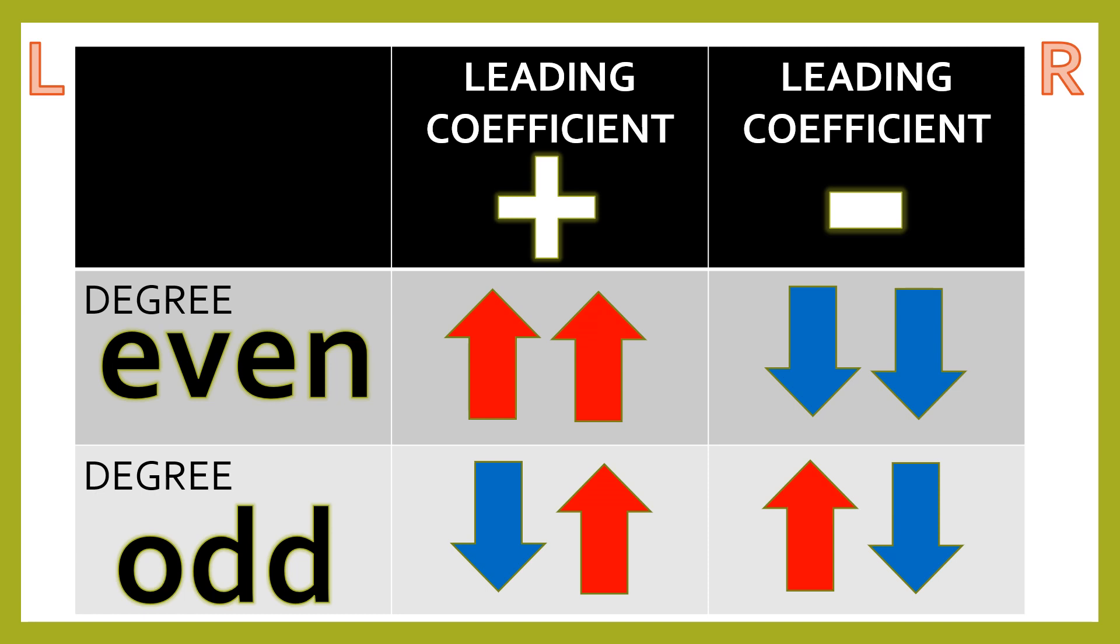If your leading coefficient is negative, and its degree is odd numbers, like 3, 5, 7, 9, the direction on the left side rises, and it falls on the right side. So, kindly take note of this table because it's very useful.